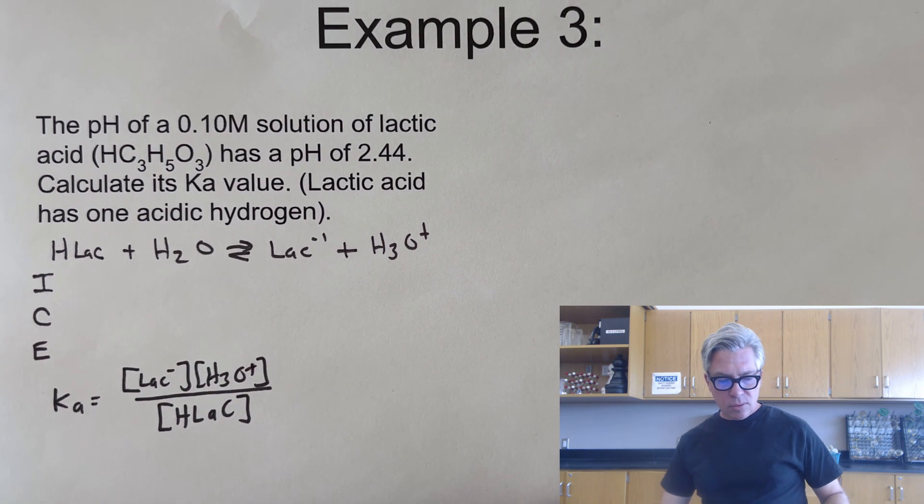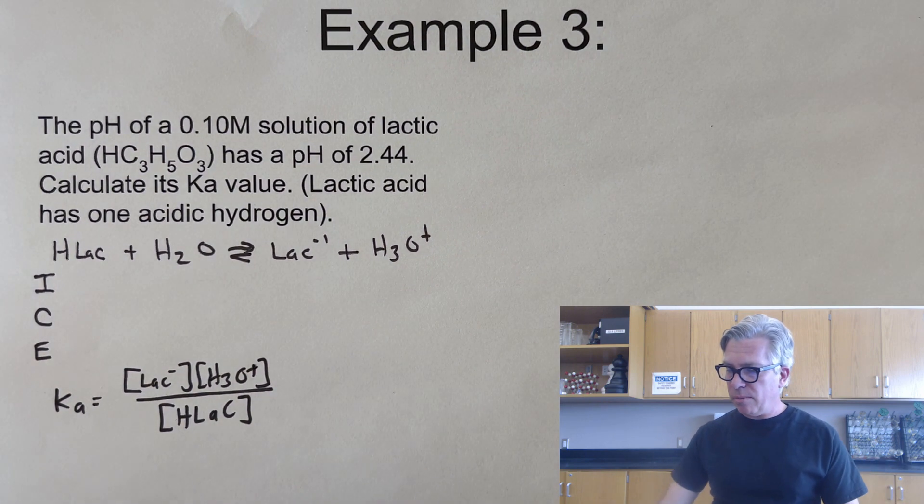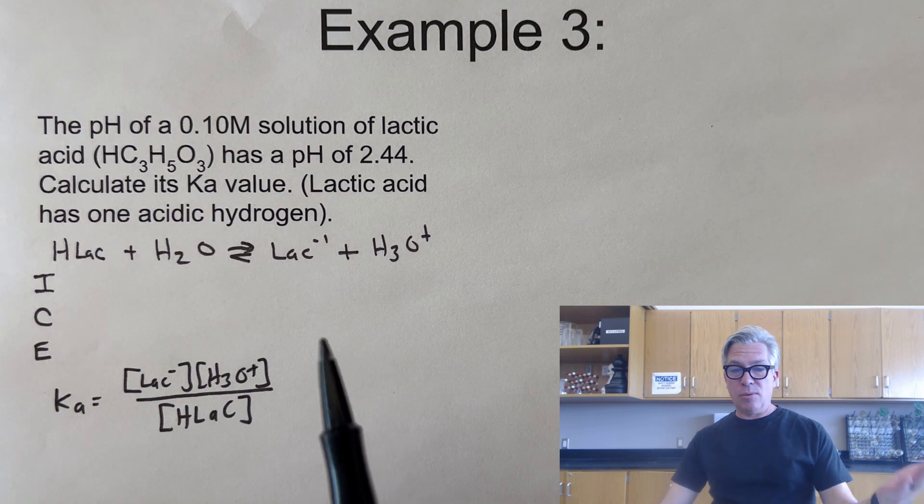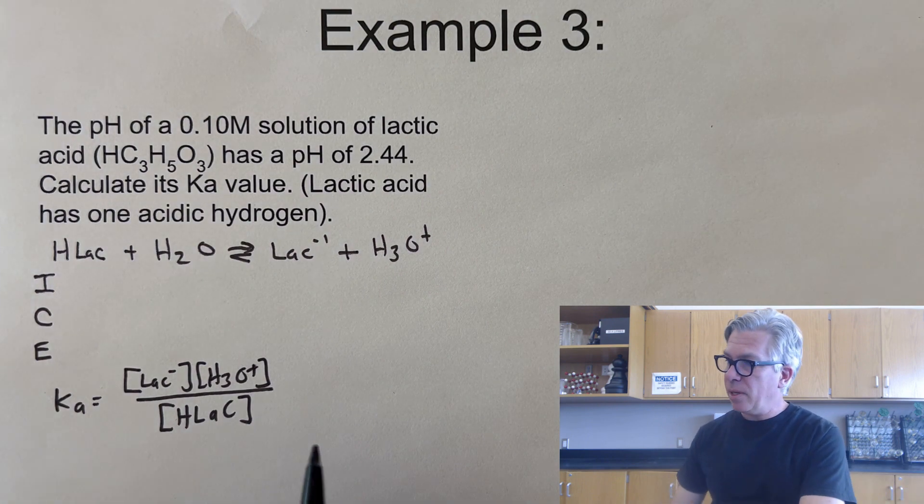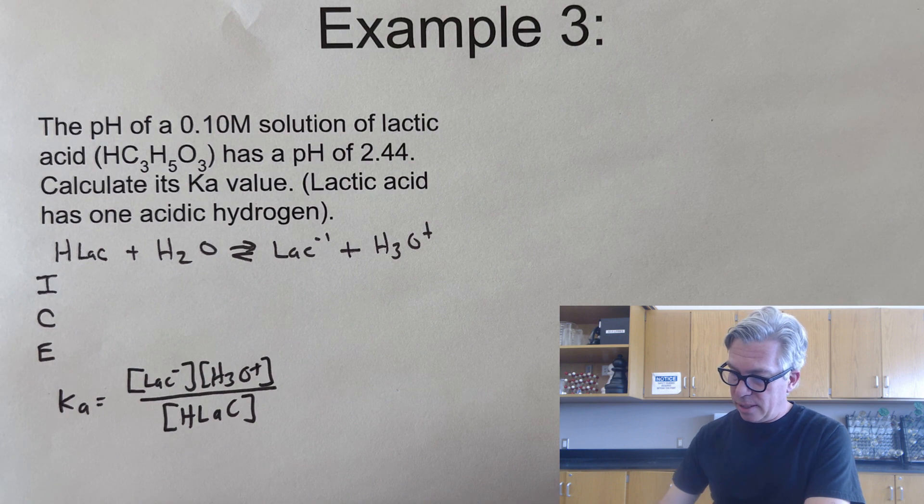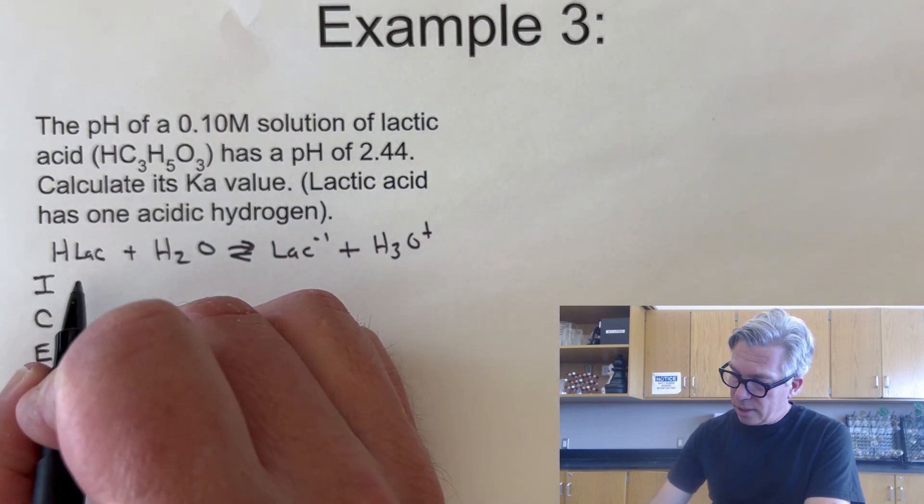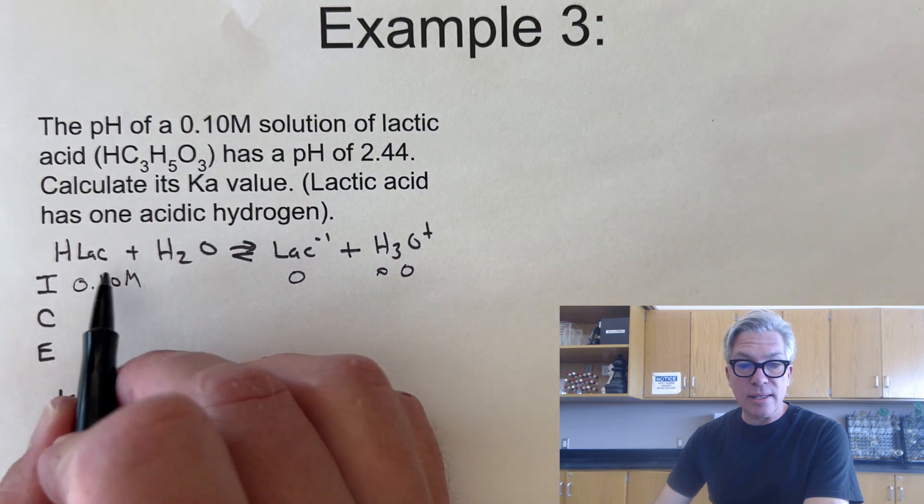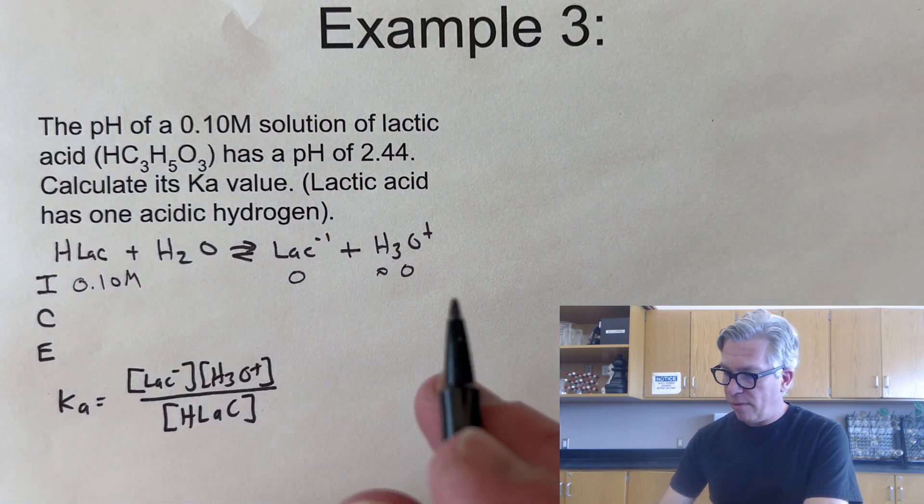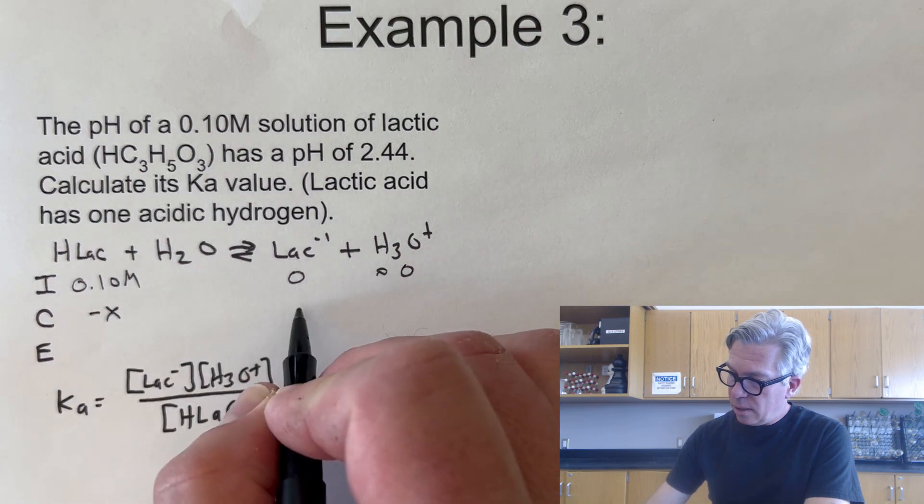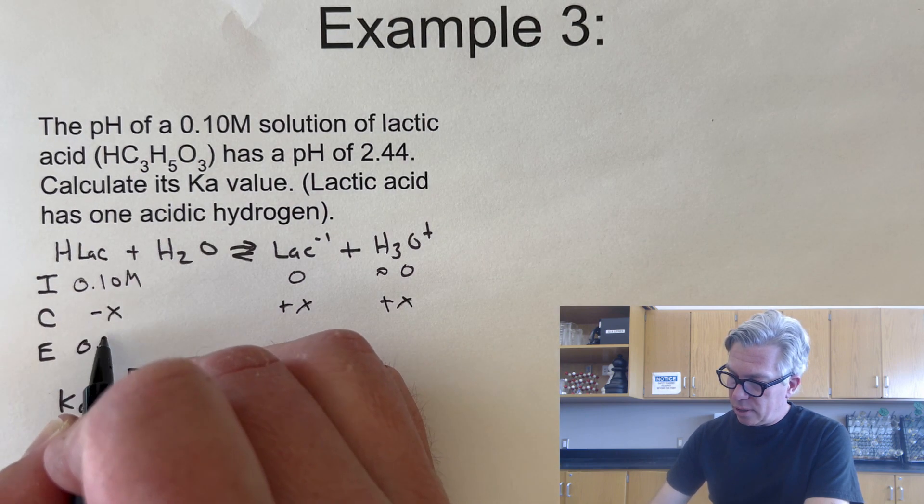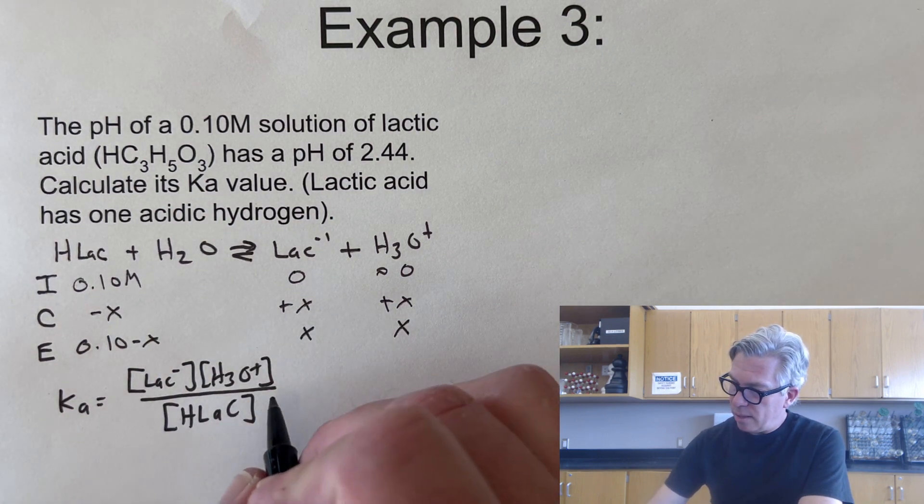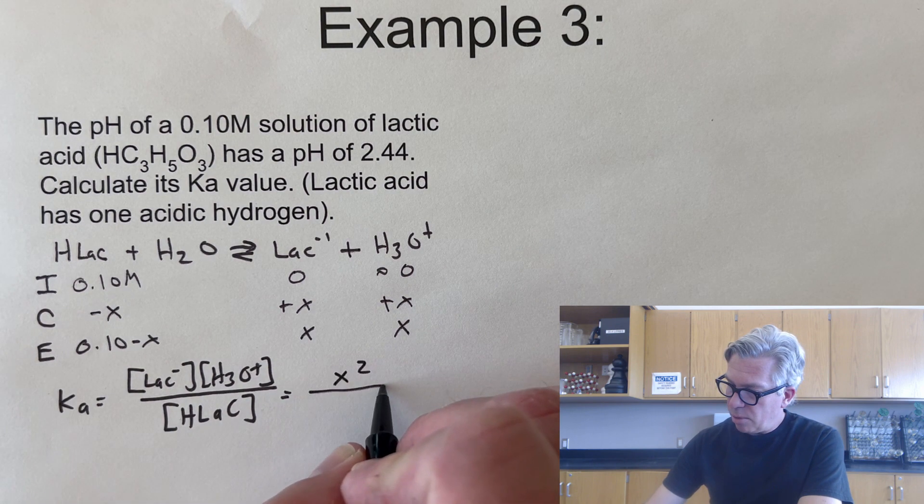So what if we actually know what the pH is? The pH of a 0.1 molar solution of lactic acid has a pH of 2.44. Calculate its Ka value. So you see how this is the opposite, we're not finding pH, we know pH but we're finding the Ka value. So we kind of have to do a little bit of oppositeness and I'll start with an ice table. It's always a good idea to do that. And you might notice that I didn't actually write the whole anion, I just abbreviated L-A-C lack just for fun and for brevity. And my Ka expression I've already taken the time to write, which is going to end up being X squared over 0.10 minus X.